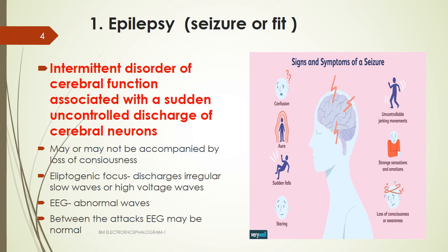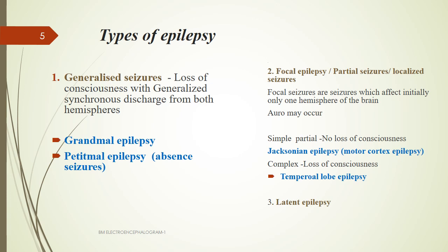The first clinically important condition is epilepsy, for which EEG is of very much diagnostic importance. Epilepsy is an intermittent disorder of cerebral function associated with the sudden uncontrolled discharge of cerebral neurons. It may or may not be associated with loss of consciousness. There can be a certain epileptic focus which produces rhythmic abnormal discharges recordable on EEG, though between attacks the EEG may be normal.